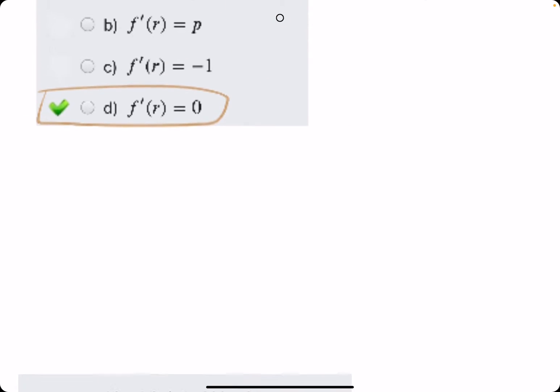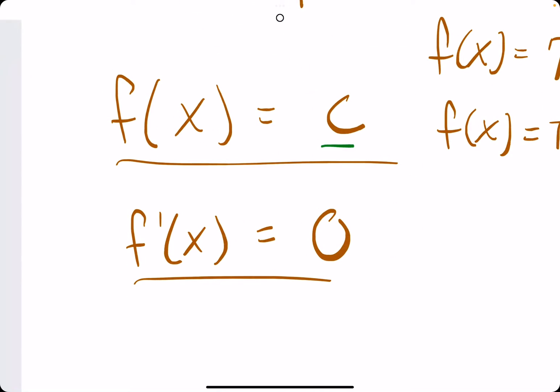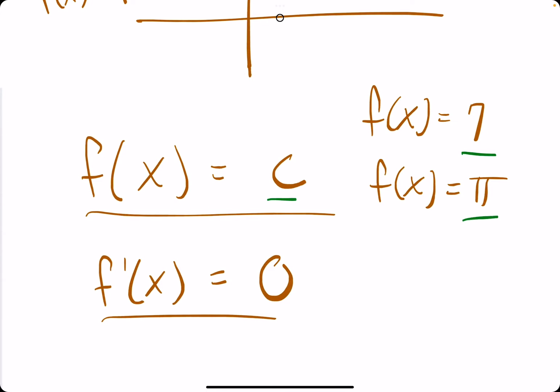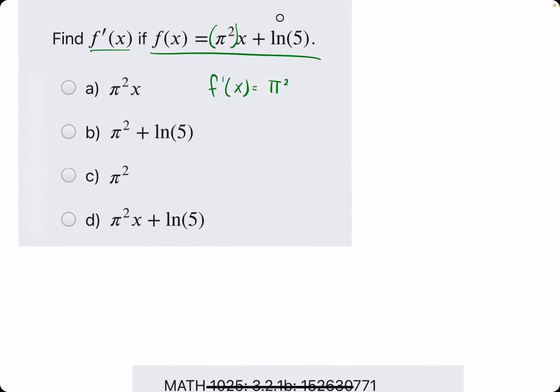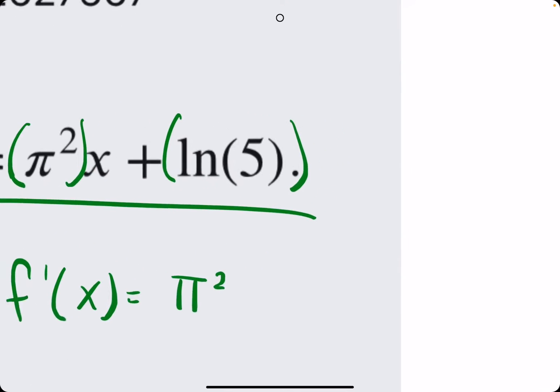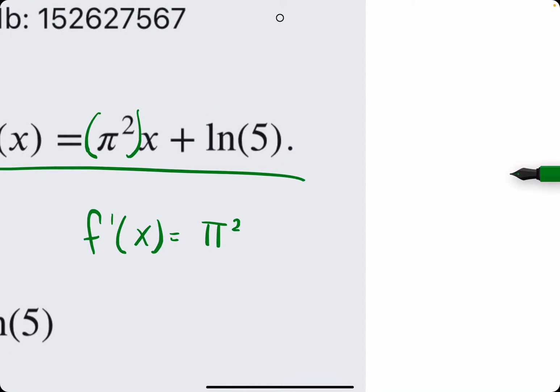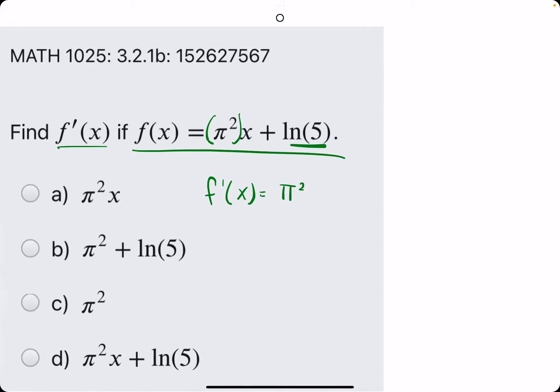And then we talked about in the previous problems that when we have a derivative of a constant c or 7 or π, whatever, anything that's just a function equals some number, then the derivative is just zero. It may be weird to think of ln of 5 as just a number, but a simple rule is if we don't see x in here, which we don't, then this is just a constant. So anything that doesn't have x is just a constant and anything that doesn't have x has a derivative of zero because the derivative of any constant is zero.